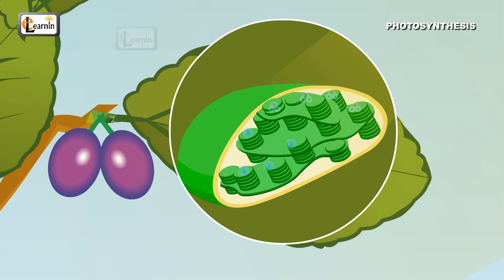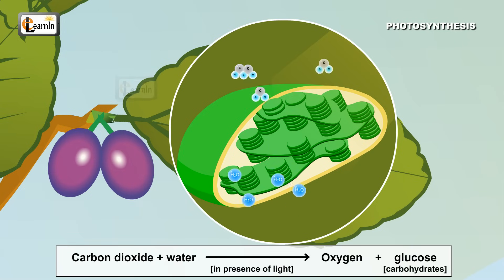The following reaction takes place in the leaves of the plant during photosynthesis: Carbon dioxide plus water in the presence of light energy results in oxygen plus glucose, or carbohydrates.